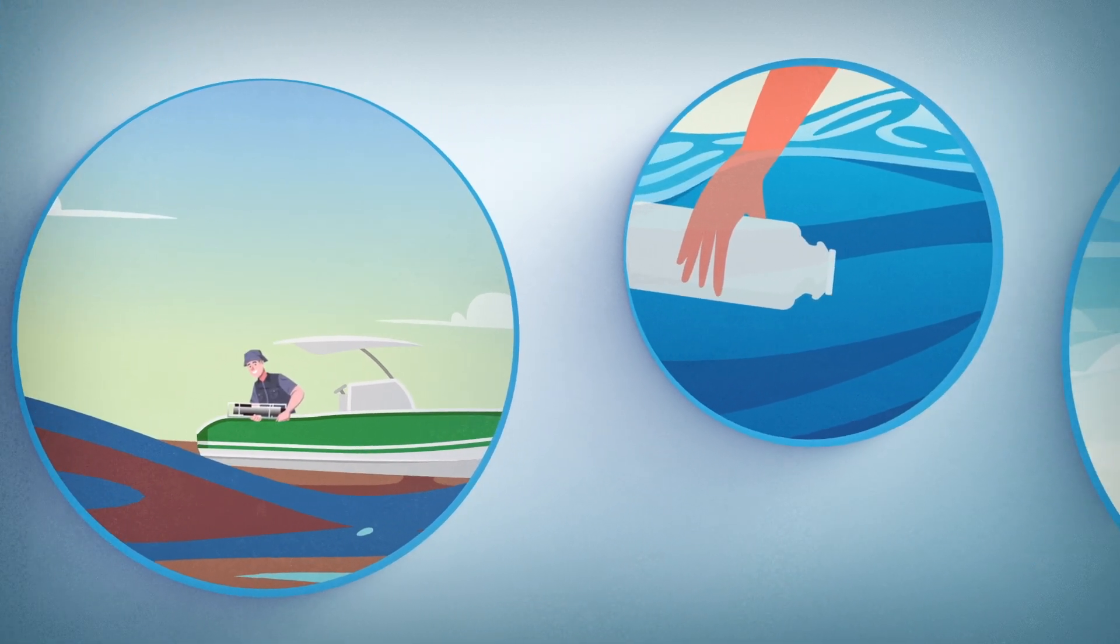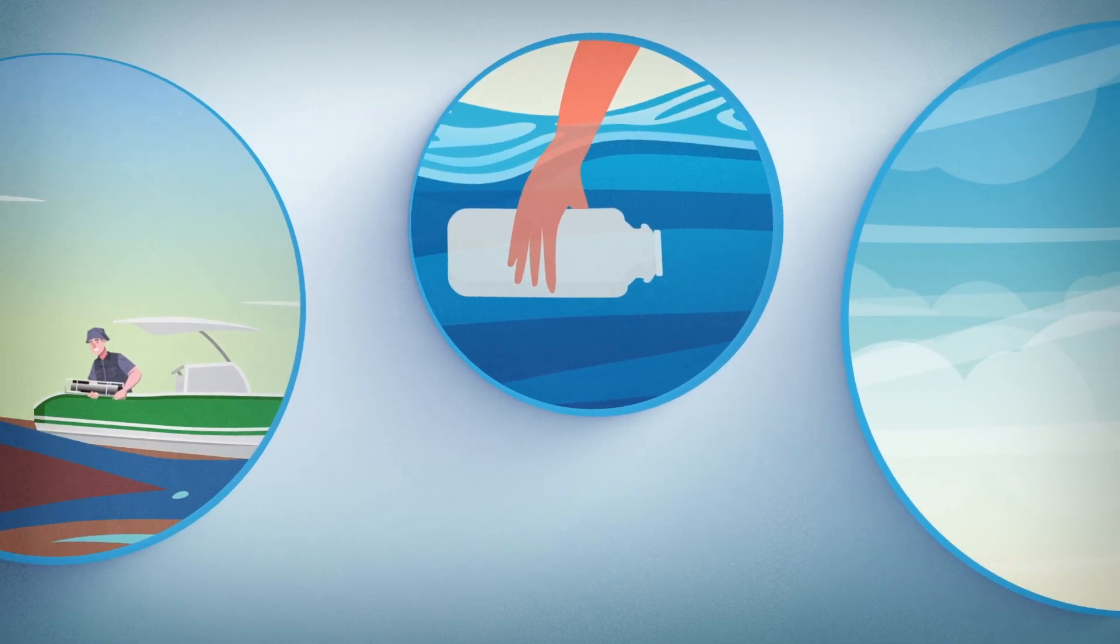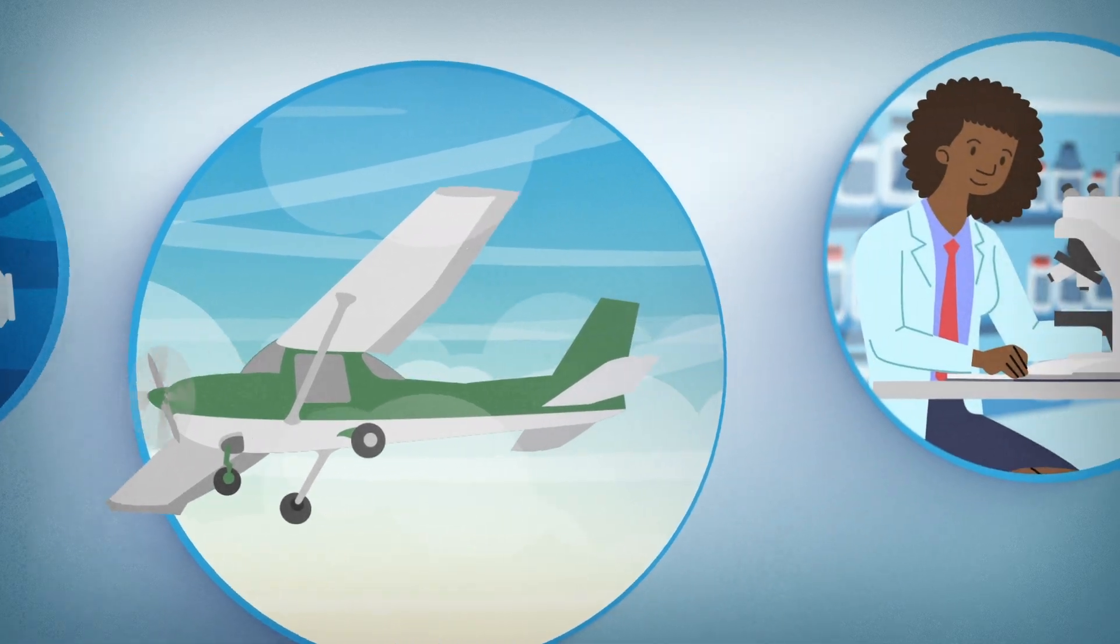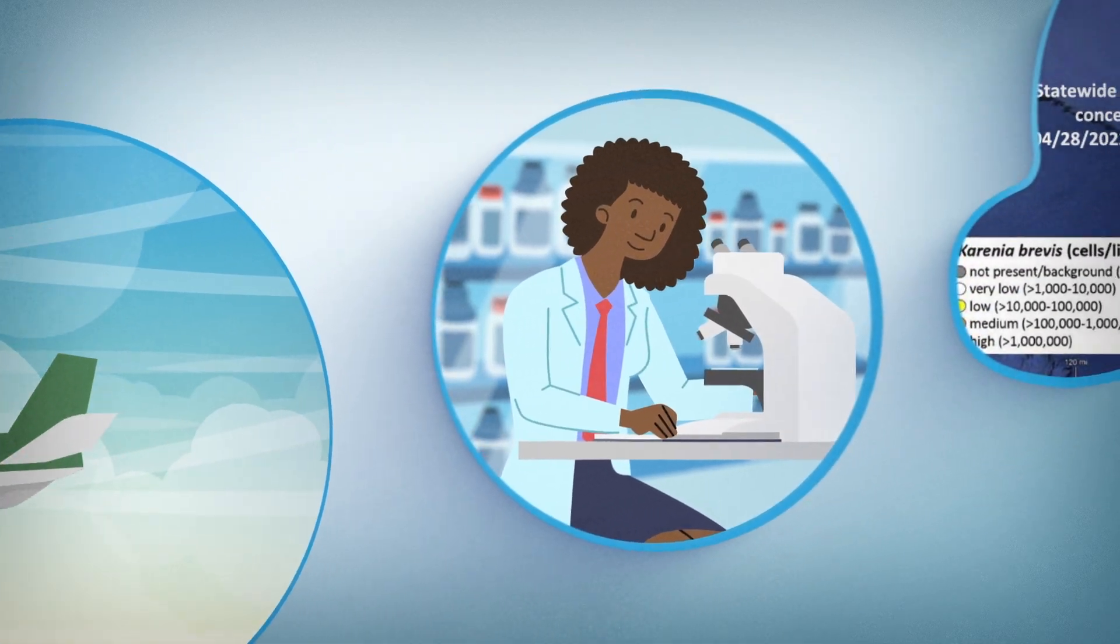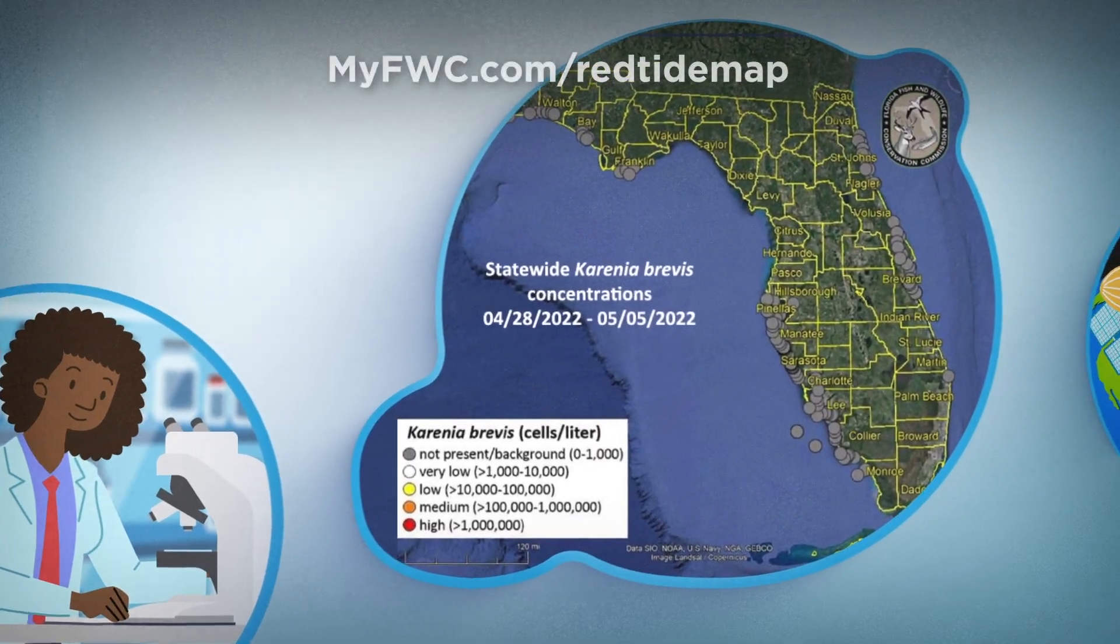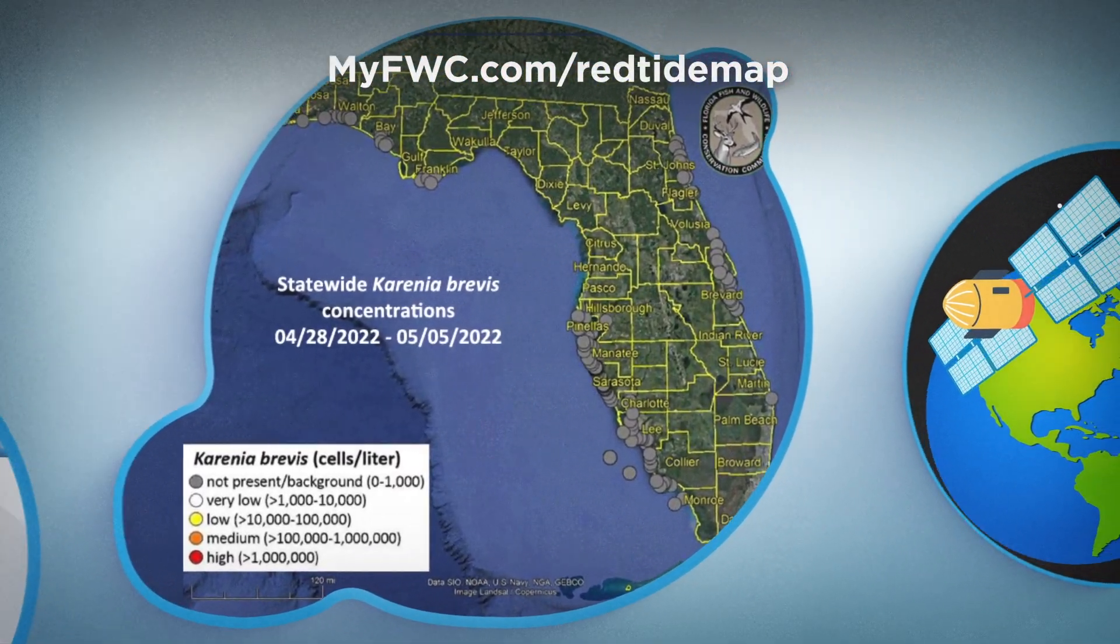the Florida Fish and Wildlife Conservation Commission works with a large network of staff, partners, and community scientists to monitor conditions statewide. Every day, samples are screened for red tide using microscopy, and results are posted on FWC's Red Tide Weekly Sample Map.